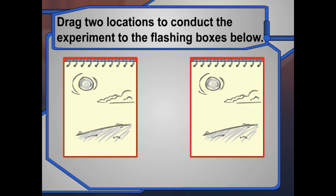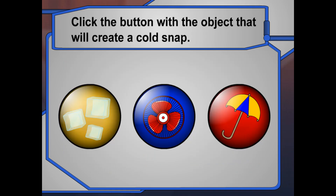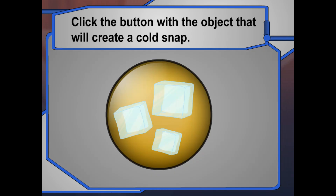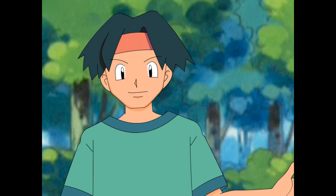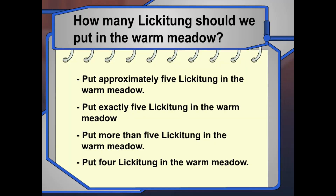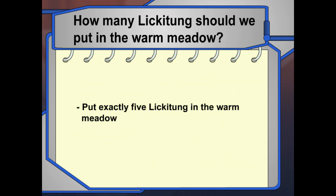That looks good to me — they're exactly the same! Now, how are we going to create a cold snap in one of the meadows? Ice! We can put blocks of ice around the tree in one of the meadows — that will be the meadow with the cold climate. And then we'll put five Lickitung in that meadow. If we put five Lickitung in the cold meadow, how many Lickitung should we put in the warm meadow? Definitely five — exactly the same number as in the cold meadow.